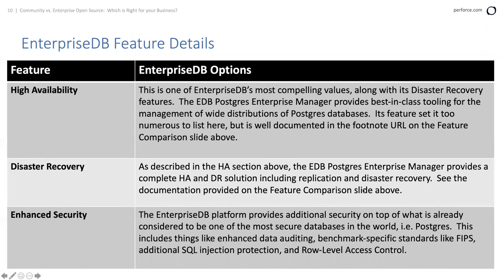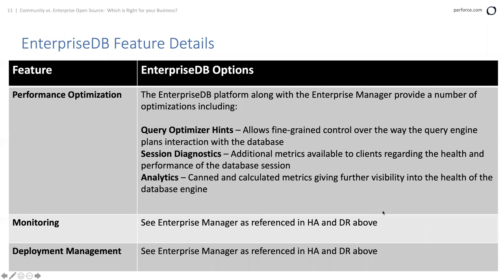EDB Postgres Enterprise Manager also gives a nice HADR solution. EDB provides benchmark security standards including FIPS compliance, row-level access control, and additional SQL injection protection. For performance optimization, EDB gives us query optimizer hints — very fine-grained control over the way the query engine plans things. Nice metrics are available at the database session level, which is very helpful for debugging widespread client issues. Canned and calculated metrics give us visibility into the health of the database engine.